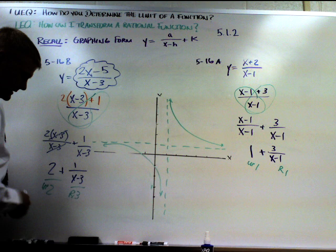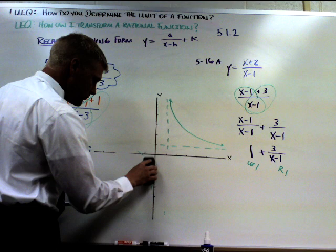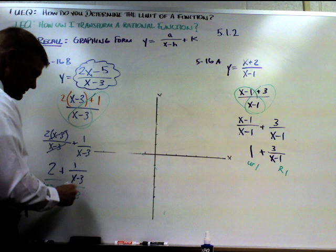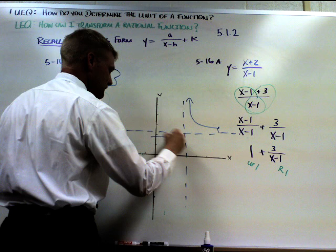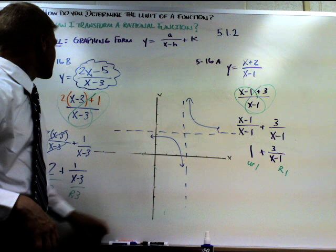And you always start the same - we always sketch our HA and our VA first. Okay, so right three, one two three, and that's going to give me my VA. Up two, it's going to give you my HA. Hyperbola there you go, that's what it is.